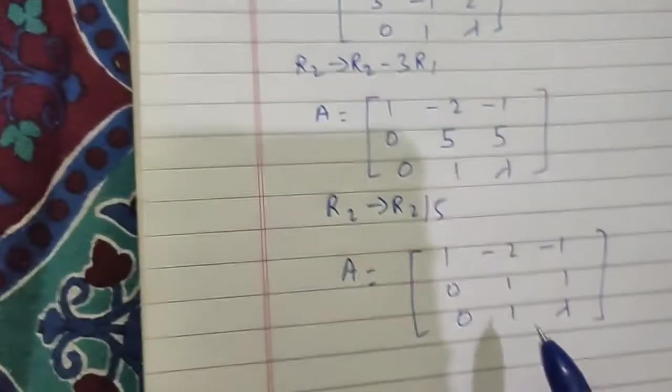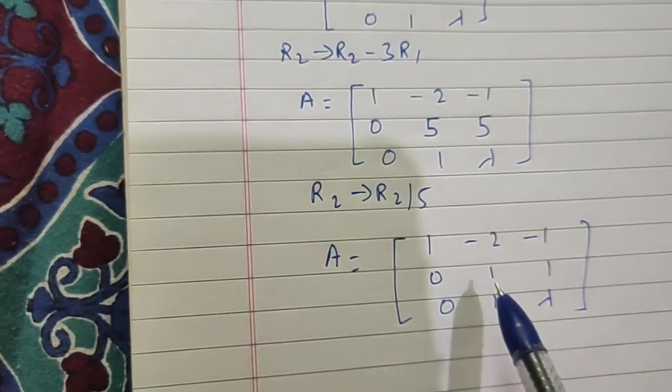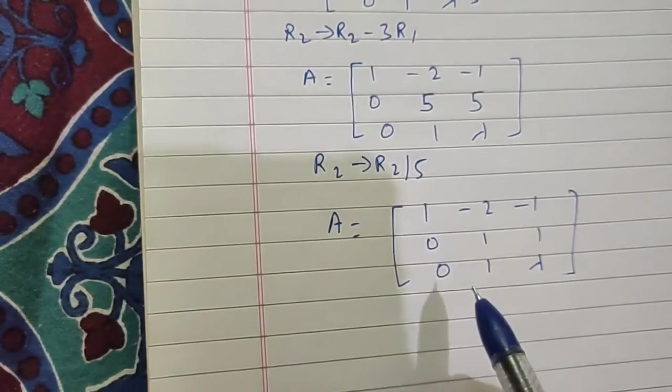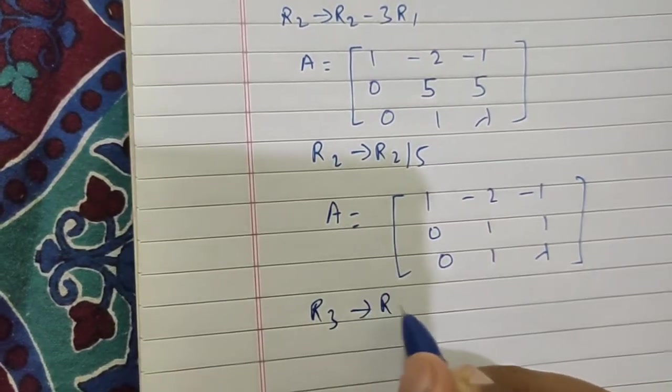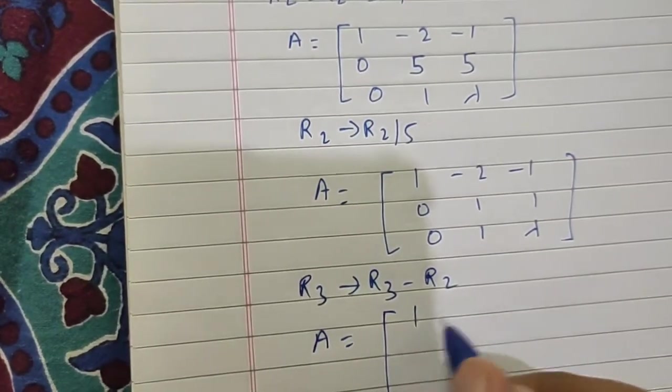In the second row the first non-zero element is 1 so this is fine. In the third row we can make changes, so R3 as R3 minus R2. A equals 1, minus 2, minus 1; 0, 1, 1; and 0, 0, lambda minus 1.